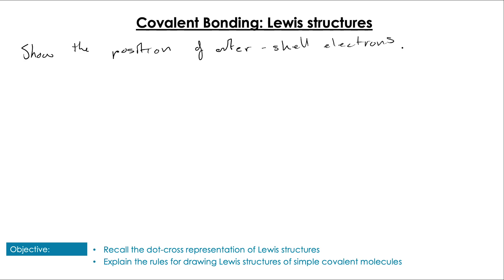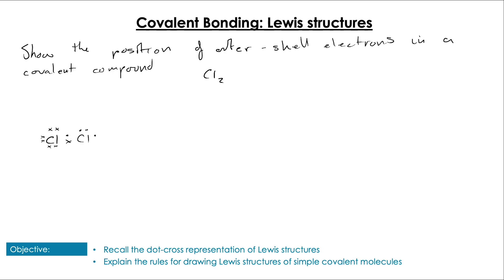Lewis structures show the electrons between atoms in covalent bonds, as well as those existing on atoms in the form of lone pairs. Looking at Cl₂, we can have a few different representations, all of which are valid for IB specification. We have the simple dot-and-cross diagram in which crosses represent electrons from one atom and dots represent electrons from another, clearly showing the covalent bond — the sharing of two electrons.